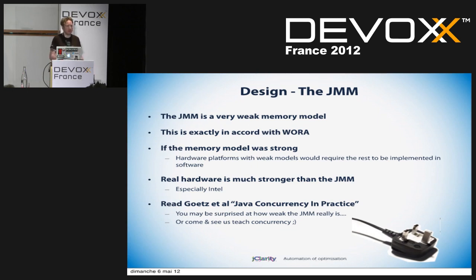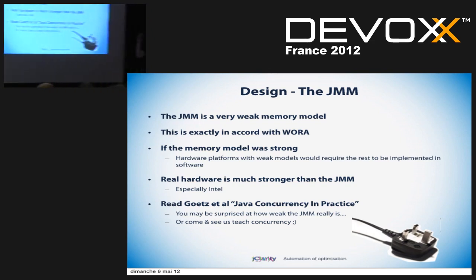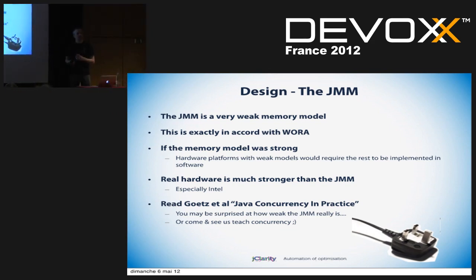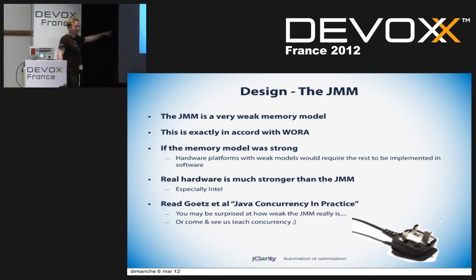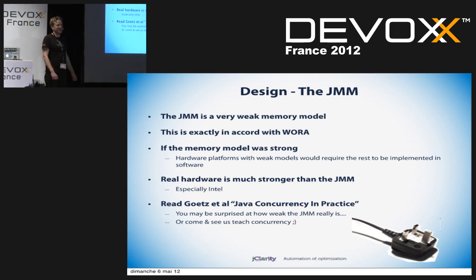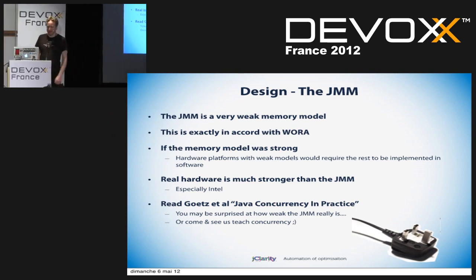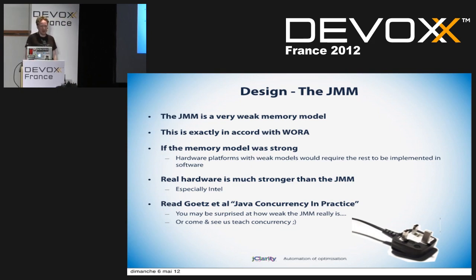You'd have to write a lot of code to maintain strong memory guarantees in software, which means the effort required to port Java to those hardware platforms would be much higher. So if you're a Java porter looking at porting to the ARM processor, you're probably quite happy that the Java memory model is relatively weak. We've got some great content on concurrency that Heinz has been working on, and if you really want to know how weak the JMM is and how dark and nasty its corners are, then come and talk to us.